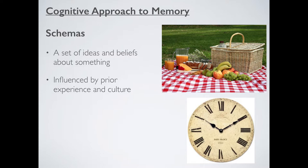A schema is very much influenced by prior experience and culture. For example, as a child before you'd even been to a restaurant with your parents, you probably had no idea what one was. First time you go, you have more of an idea, and it's built upon thereafter. It's also influenced by culture — if we were in Japan and I asked you to picture a restaurant, you'd probably have a different idea. It's very common in Japan to kneel at the table instead of sitting in a chair, and you'd probably have chopsticks instead of a knife and fork. So you can see how culture might influence your schema.